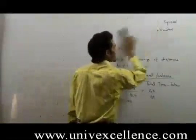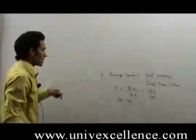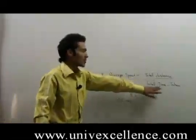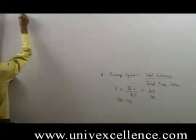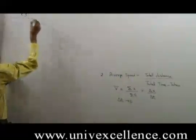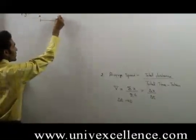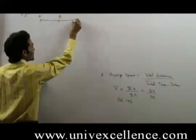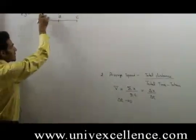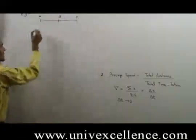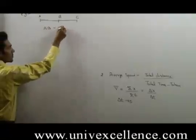Average speed is defined as total distance upon total time taken. Now suppose an object moves from point A to B and then from B to C, and the distance between A to B and B to C is the same — that is, the length of line segment AB is equal to BC.